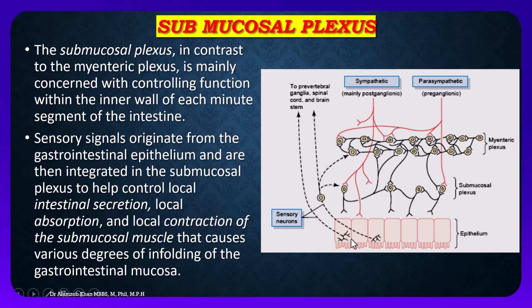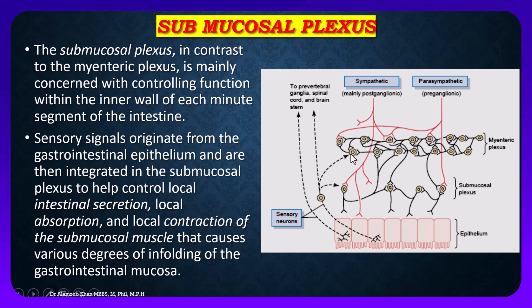The submucosal plexus controls various degrees of infolding of the gastrointestinal tract wall. These sensory signals from the submucosal plexus integrate with both the submucosal and myenteric plexuses, and also send signals to higher centers, ultimately causing secretion and movement of the gastrointestinal tract.